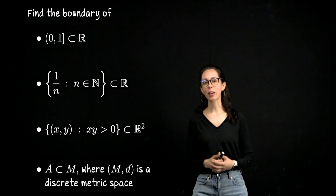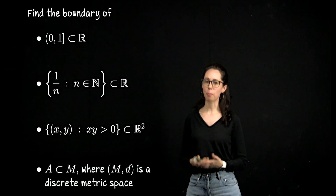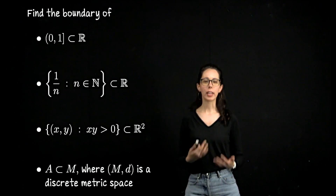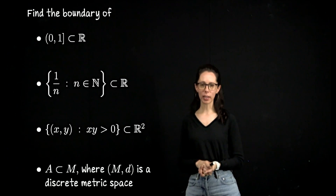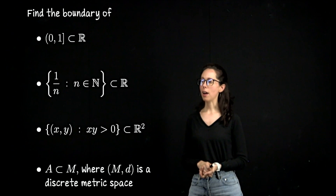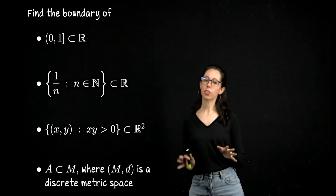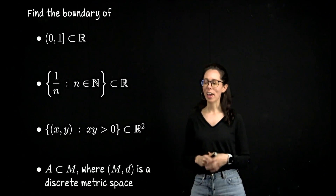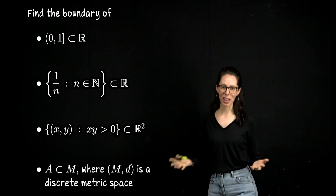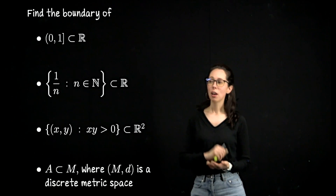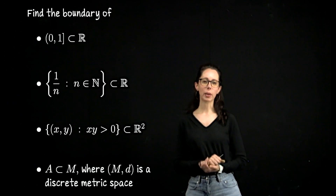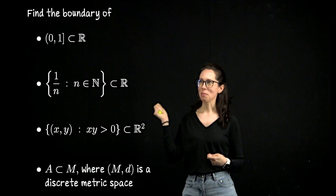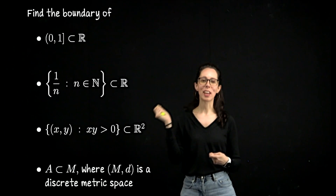I would like for you to pause and work out the boundaries of these four examples: an interval on R, the Archimedean set on R, the first and third quadrants as a subset of R², and any subset of a discrete metric space. Fully work these out because I'm not going to talk through them in detail — I'm just going to put up the definition and the result.